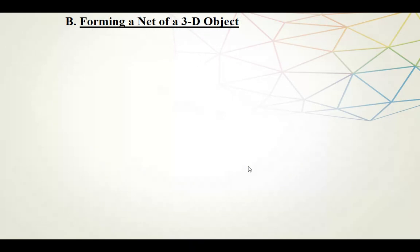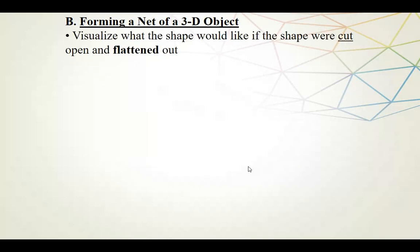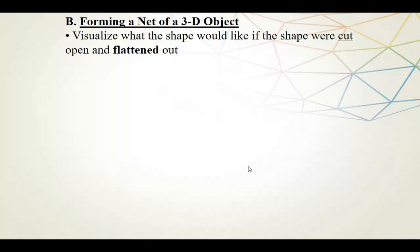Now let's do it the other way around. Let's say we have a 3D object and we want to form the net. Basically, you just need to visualize what happens if you take that 3D object, cut it open, and flatten it out.